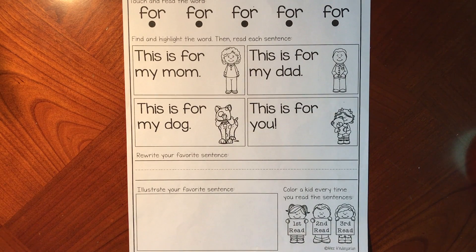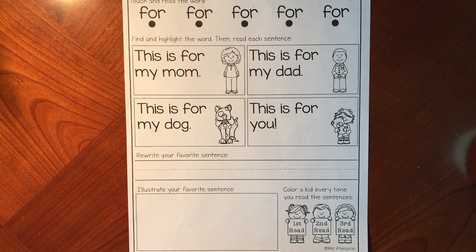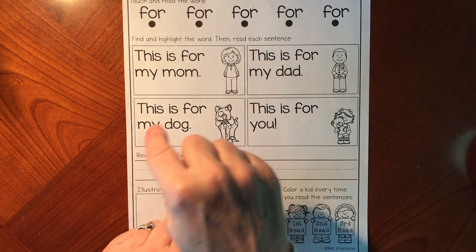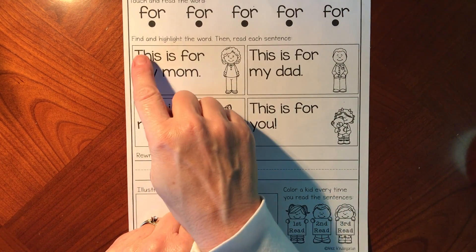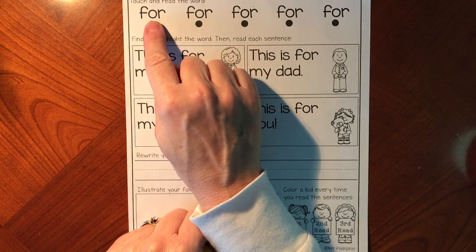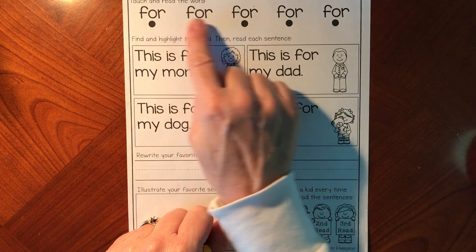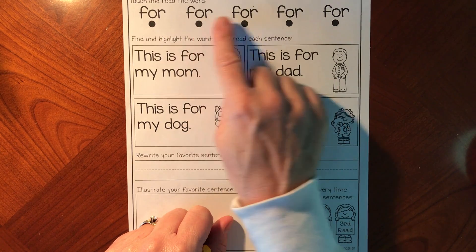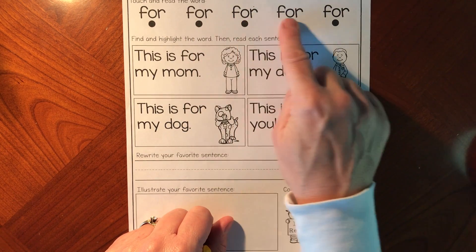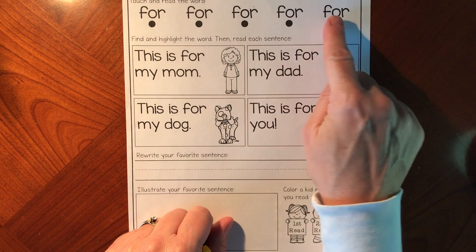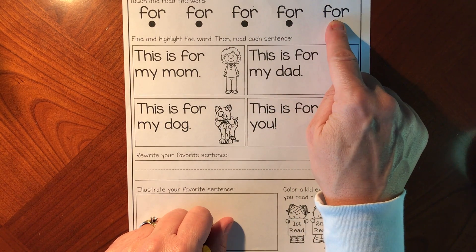Friends, we have the sight word for that we're going to be looking at today. Let's go ahead and touch the dots and read the word. Ready? For, for, for, for, for.